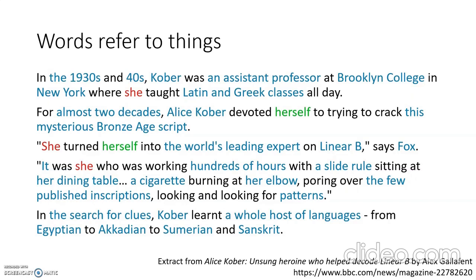In the search for clues, Kober learned a whole host of languages, from Egyptian to Akkadian to Sumerian and Sanskrit. With the colours, I've tried to draw your attention to three different types of noun phrases. The first ones in blue are noun phrases that refer to entities in the world, like Brooklyn College or Alice Kober or Sanskrit. In red are pronouns like she — other examples would be he, him, her, I, me, you, they, them. And in green we have herself — another example would be himself, themselves, each other. These are called anaphors.